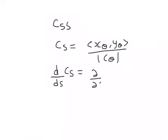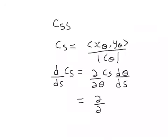From our first video we know that dθ/ds is 1 divided by the magnitude of c_θ. So this is where we are at now, and we have to figure out what the partial of c_s with respect to θ is.